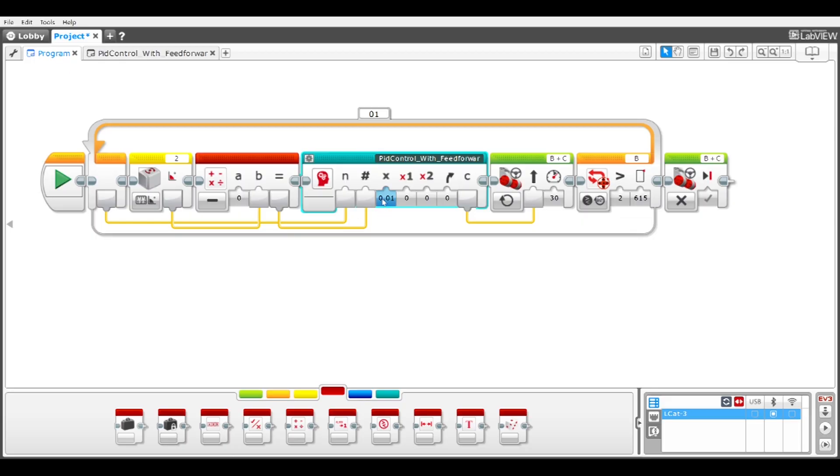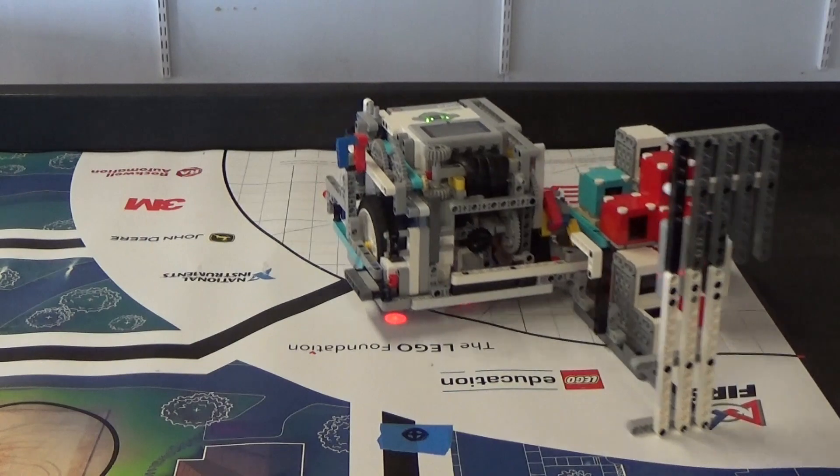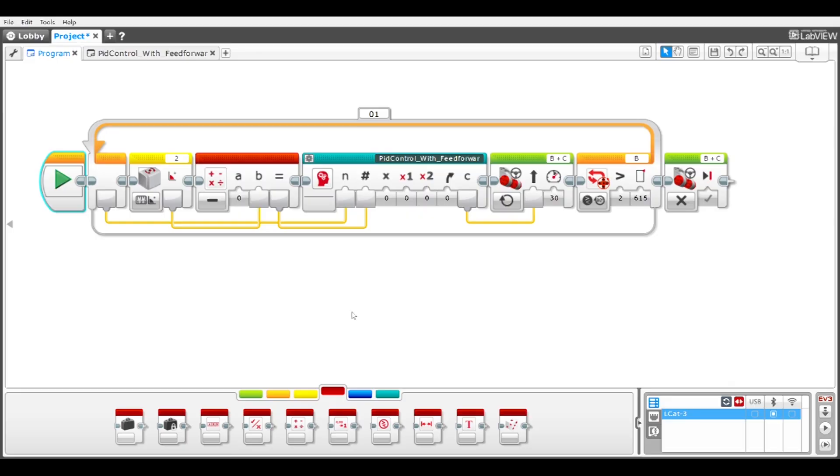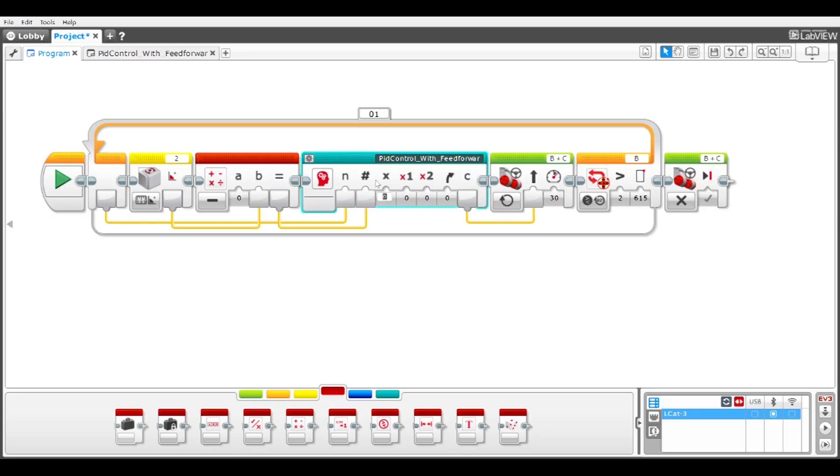I'll start by setting the proportional, integral, and derivative gains and feed forward to zero to show what happens when just driving straight with the move steering block. The blocks cause the robot to veer to the left more and more. I'll make kp 1 to show what just proportional control does.